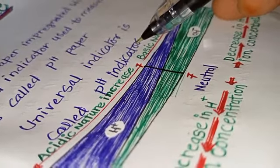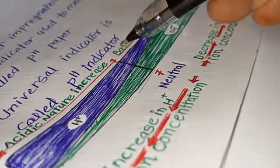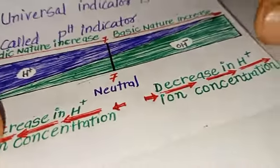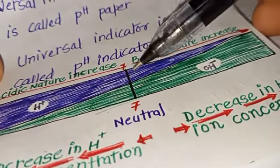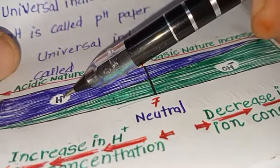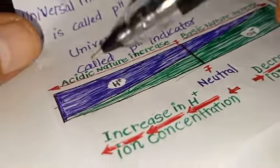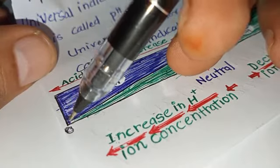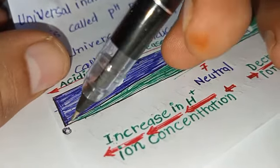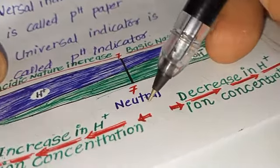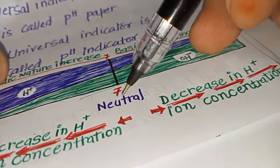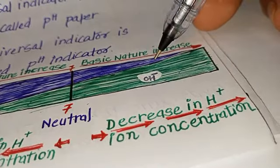Now we should understand about the universal indicator, also called the pH indicator. The blue color represents the H+ ion concentration and the green color represents the OH- ion concentration. When pH is almost zero, the H+ ion concentration is at its highest. As the pH increases, the H+ ion concentration decreases and OH- ion concentration increases. At neutral pH of 7, the concentration of both H+ and OH- ions is equal.